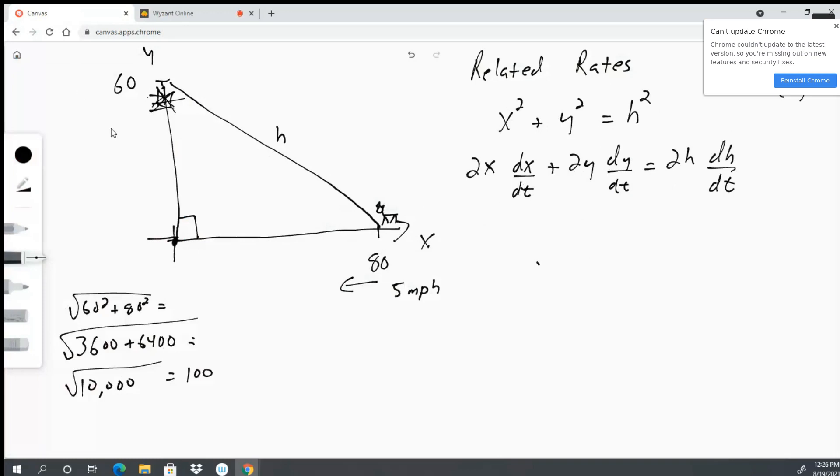We're given certain things. We're given x is 80, we're given y is 60, so let's start and we'll plug these values in. 2 times 80 feet, and we'll leave the units out for now just for simplicity's sake. We have 2 times 80 feet and we're told that the dog is walking toward the tree at 5 miles per hour.